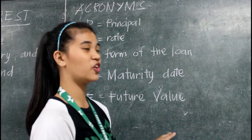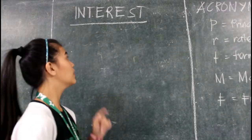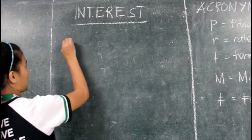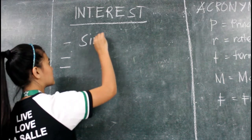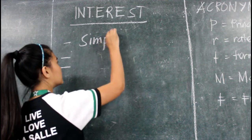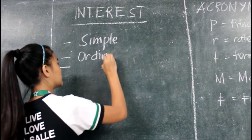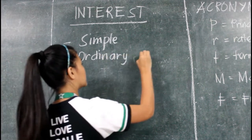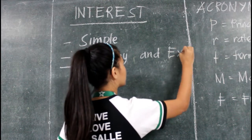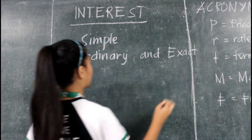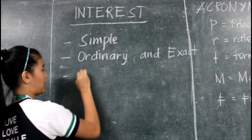Future value is the sum of your principal and your interest. Interest has three types: we have simple interest, ordinary and exact, and lastly, compound interest.